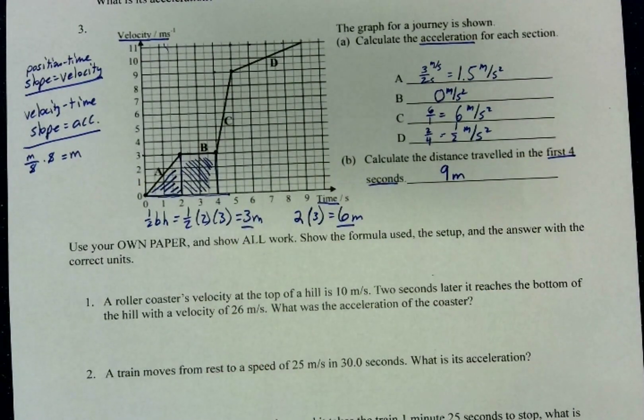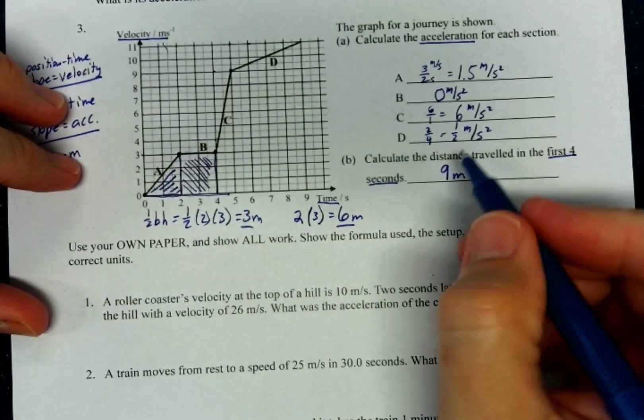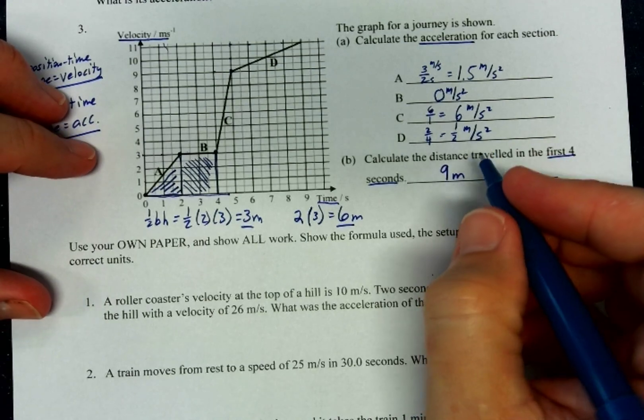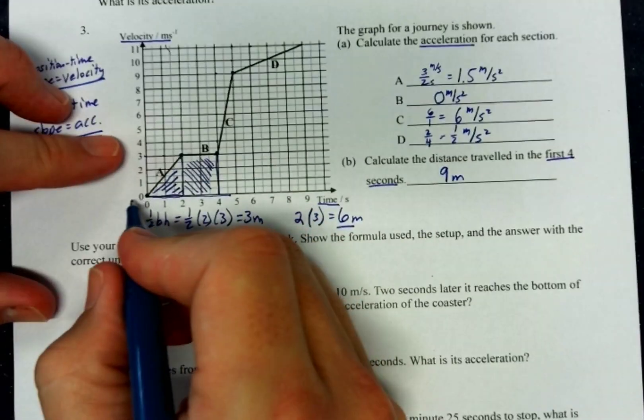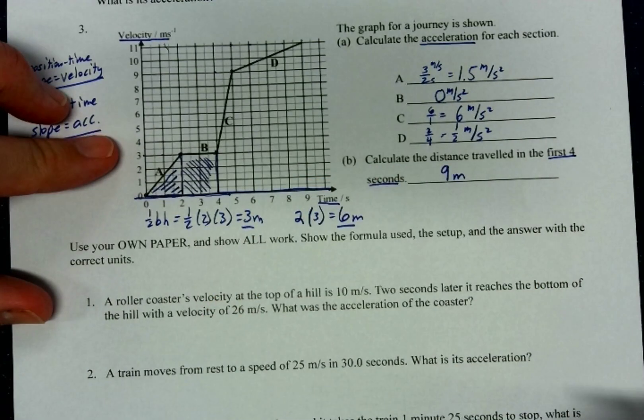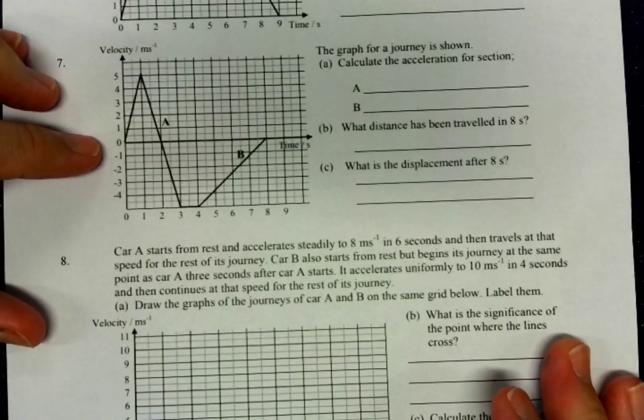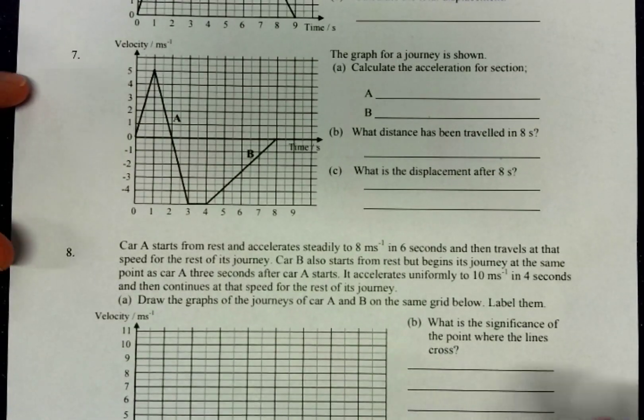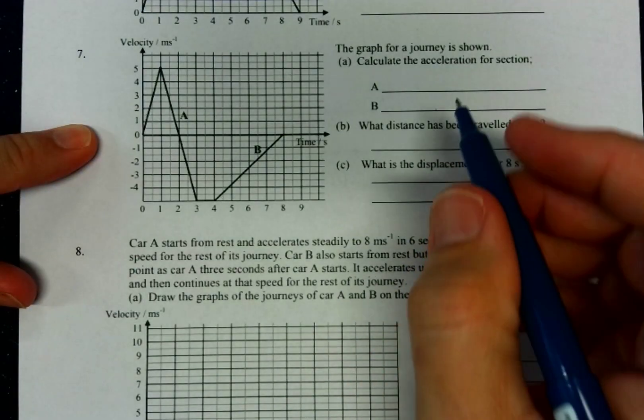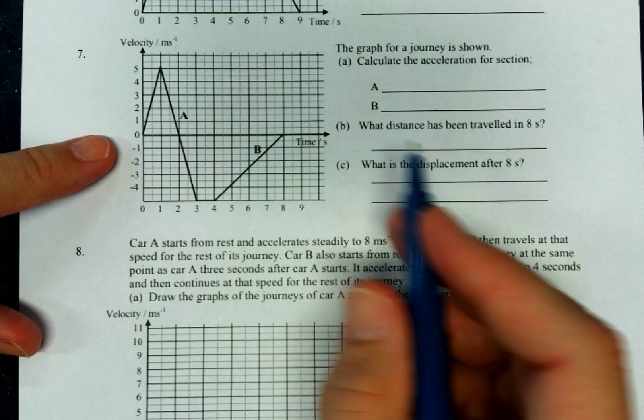Now if it's asking for distance, then all I have to do is find those areas and add them together. If it asks for displacement, then displacement actually wants me to consider anything above the x-axis is positive and anything below the x-axis is negative. We're going to skip to this question right here, number seven. I think you can do number six. So we'll look at number seven here.